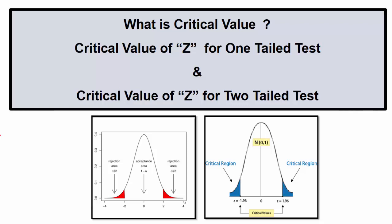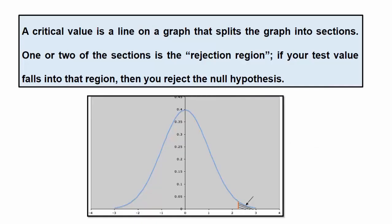Hi friends, welcome to my channel. I am Dr. Yogesh Nyakwar and today we are going to understand about what is critical value and how to find out the Z critical value. Critical value is any value or the line on the graph which separates your graph into two regions. First is the rejection region and second is the acceptance region. Now this critical value is very useful for hypothesis testing.